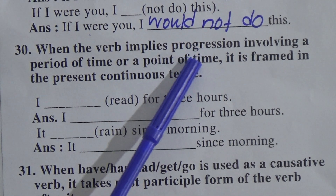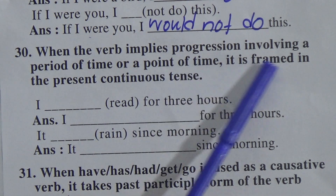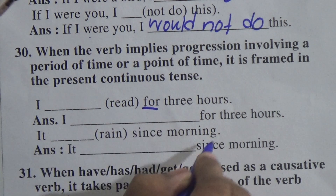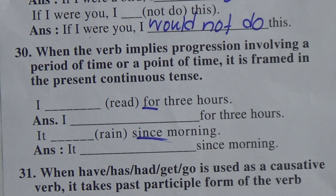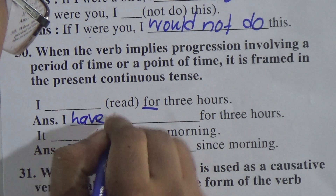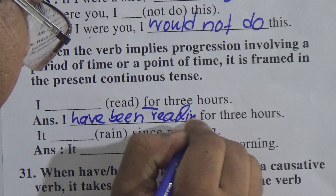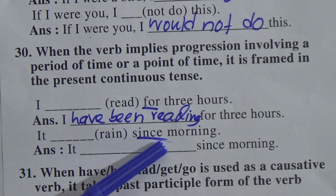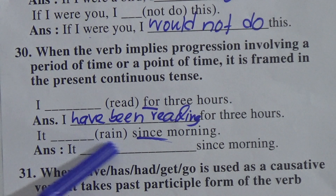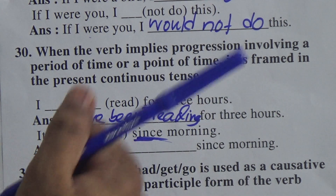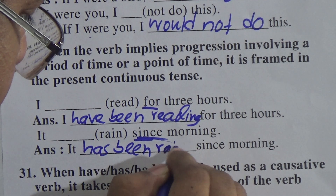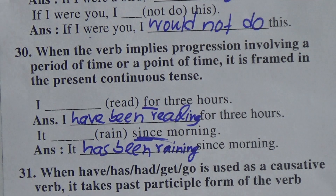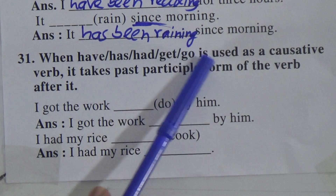Rule 30: when a verb implies a period of time or a point of time, it is framed in the present perfect continuous tense. If a sentence has 'for' or 'since' and presents a duration or period of time, we use present perfect continuous tense. Structure: subject + have been / has been + verb-ing. Example: 'It does rain since morning' → 'It has been raining since morning.'